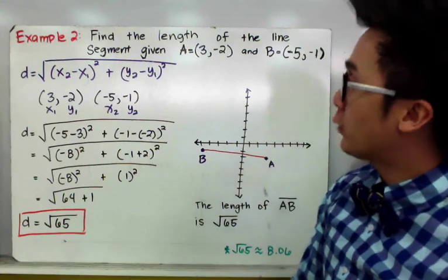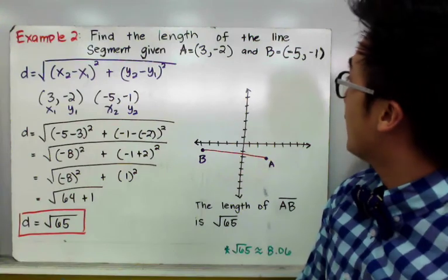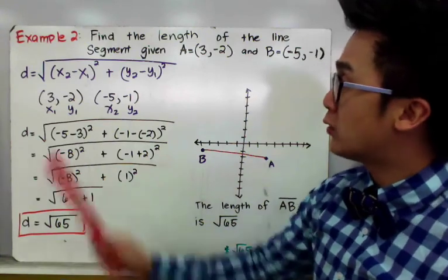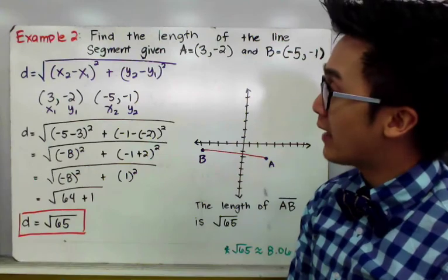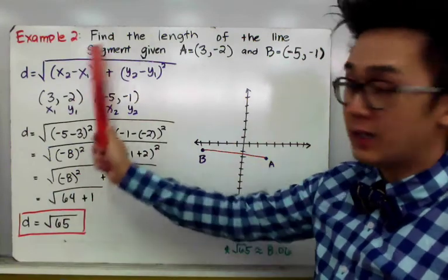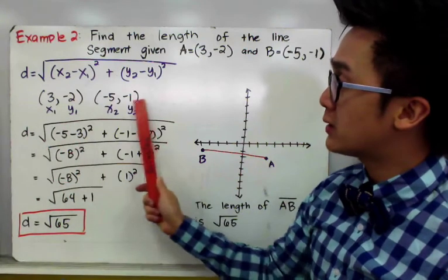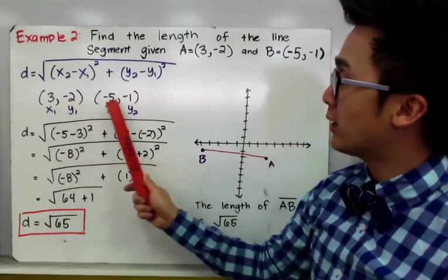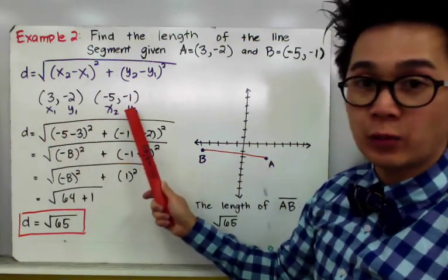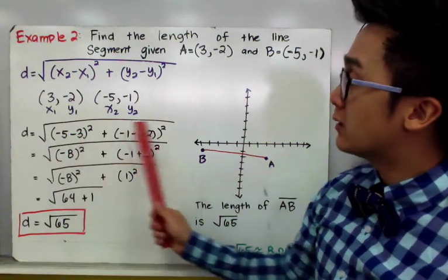In our next example, we have to find the length of the line segment given A is equal to (3, −2) and B is equal to (−5, −1). Since we're looking for the length of a line segment, we can use the distance formula. After labeling your points with their corresponding x and y coordinates, you'll be able to apply the distance formula.